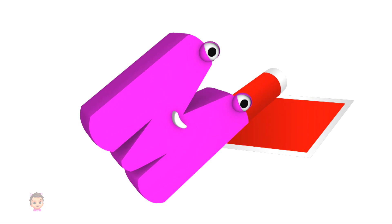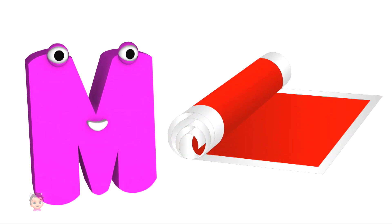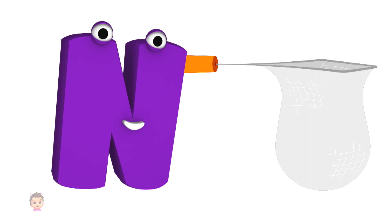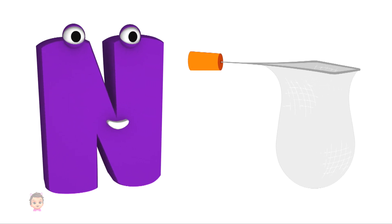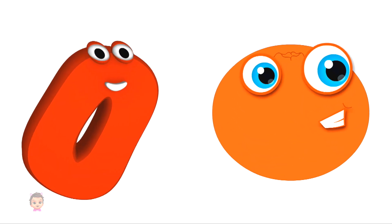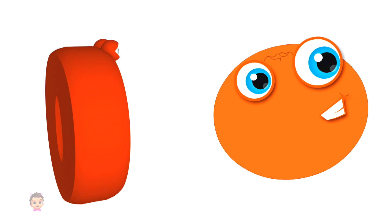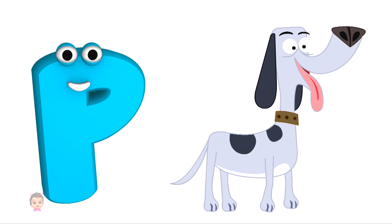M is for mat, muh, mat. N is for net, nuh, net. O is for orange, uh, orange.